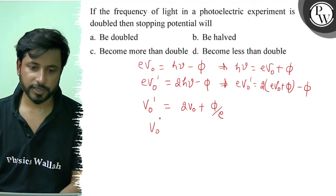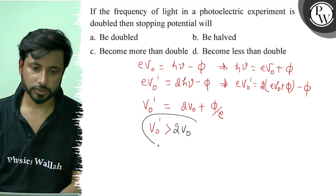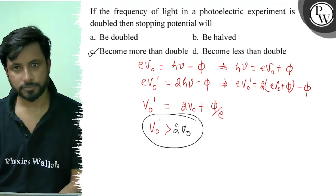So we will see that V₀ dash is greater than 2V₀. V₀ dash is greater than 2V₀. So final answer is option C, become more than double. Best of luck.